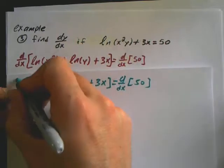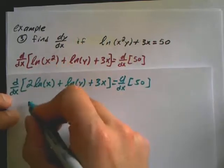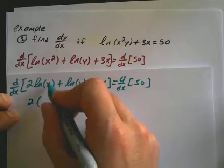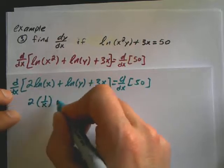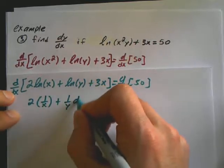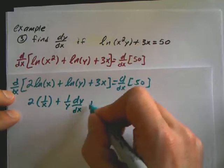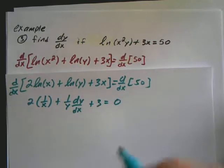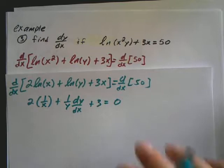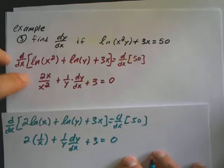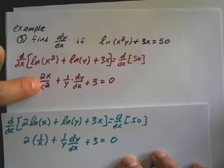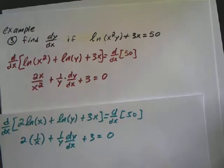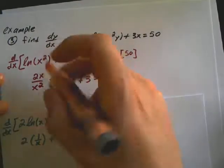Well, if I would have done that, I would have got 2 times the derivative of ln of x is 1 over x plus 1 over y dy/dx plus 3 is equal to 0. So you might be thinking, how is that different than what I got? Well, see how I have this 2? And I have this x over x squared.